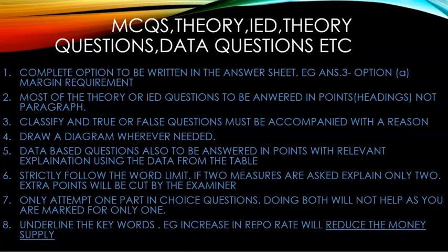Point number eight: you have to underline keywords. The paper examiner has many papers to check and cannot read each and every line. So if the question asks about an increase in repo rate, our main answer is that an increase in repo rate will certainly reduce the money supply. Underline 'reduce the money supply' — that is our keyword. The examiner will spot it and you will be given marks.